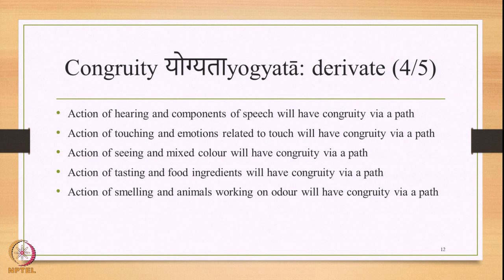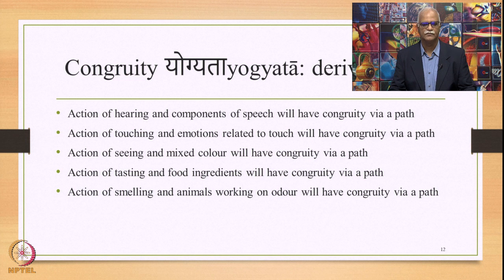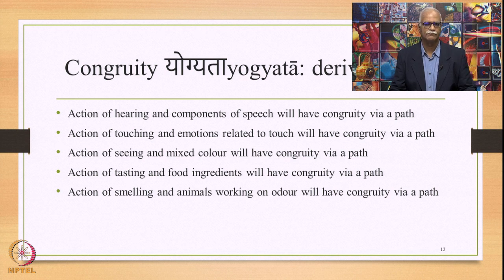If we look at the derivative part of the Arthakasha, we can say the following: the action of hearing and components of speech — which were listed as derivatives of the Arthakasha related to the sense organ — will have congruity, but not direct congruity. They will have congruity via a certain path that goes through the simple Arthakasha. Similarly, the action of touching and emotions related to touch will have congruity via a path through the simple Arthakasha.